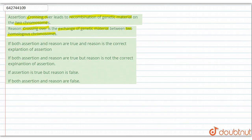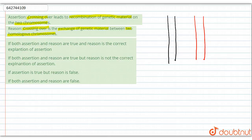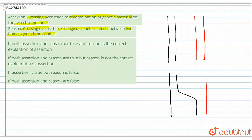Crossing over is basically a process in which recombination takes place. Here we have one genetic material and here we have another genetic material. In crossing over, these genetic materials exchange their DNA - they exchange DNA like this. This process is called crossing over.